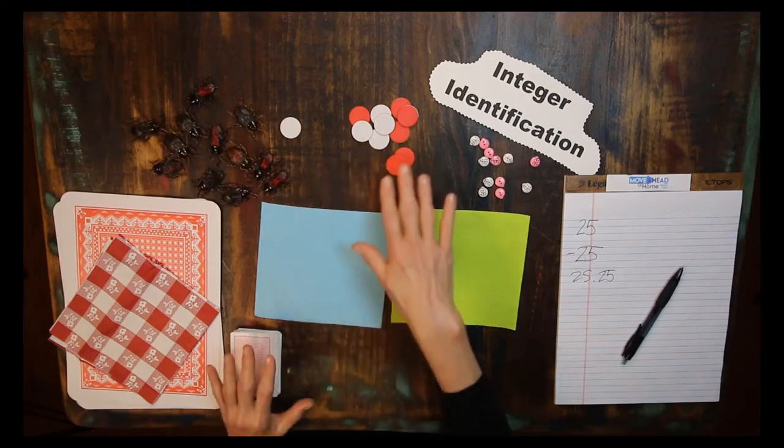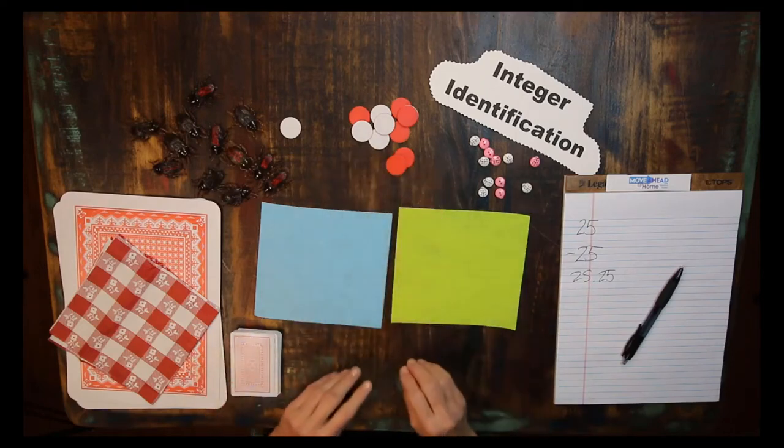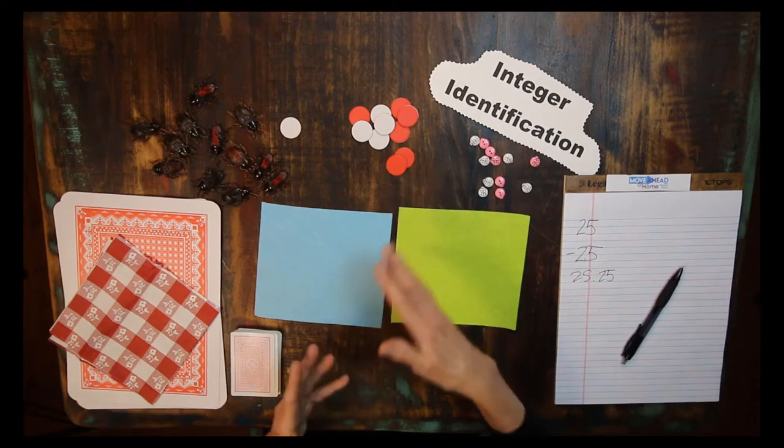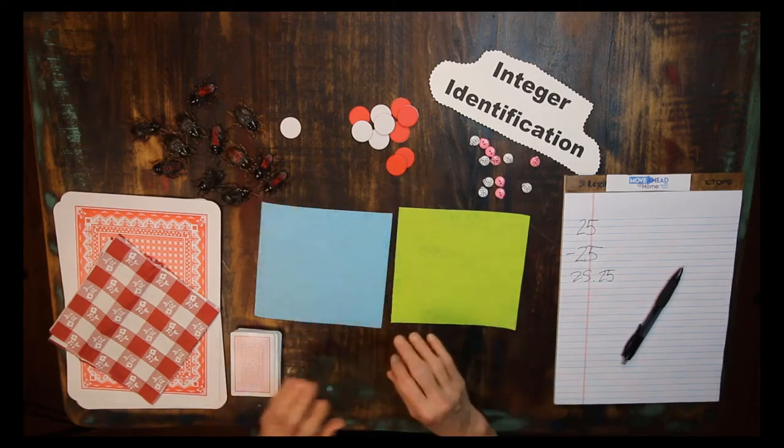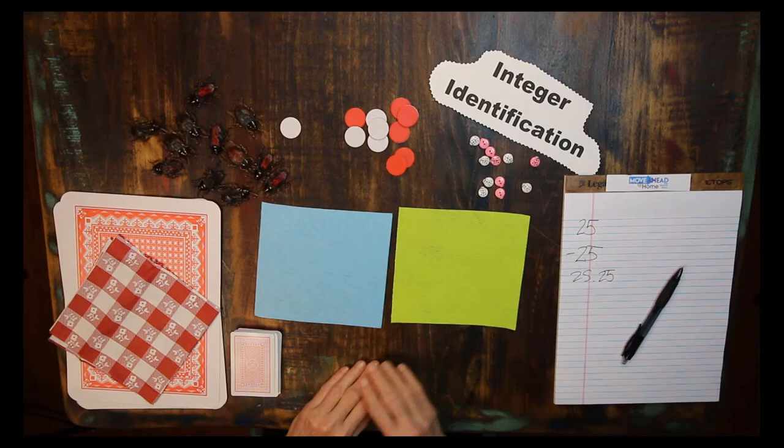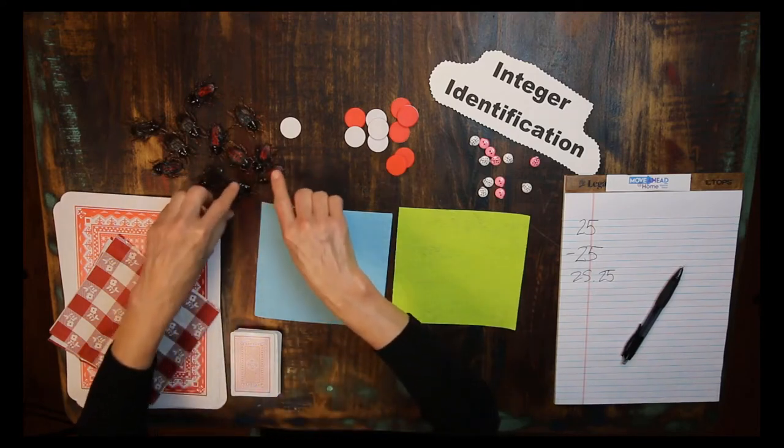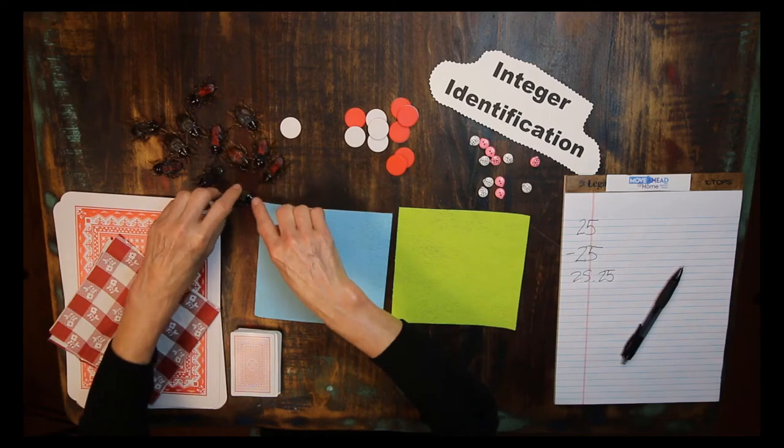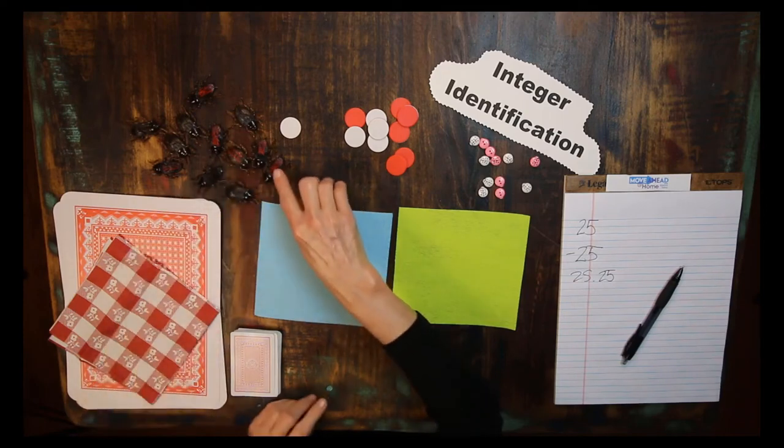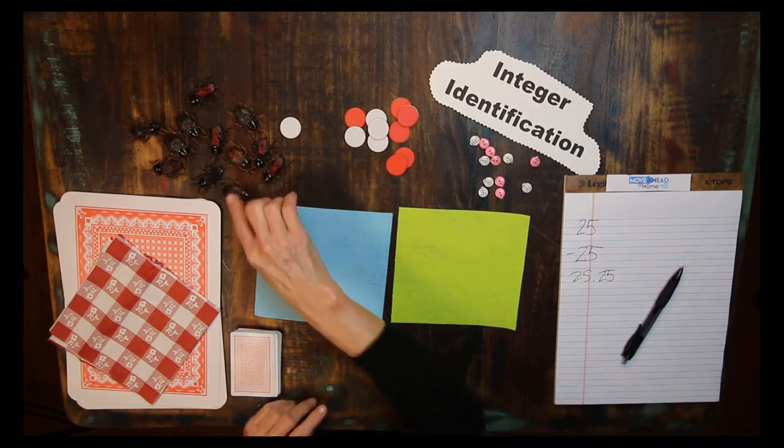You'll need at least 15 red and 15 white of the same item such as buttons or red paper or insects. You can also use 15 of a lighter color and 15 of a darker color. I use these counters and if you're magnifying the screen you're right they are plastic roaches. The roaches with the red stripe on the backs are negative and the ones without a red stripe are positive.